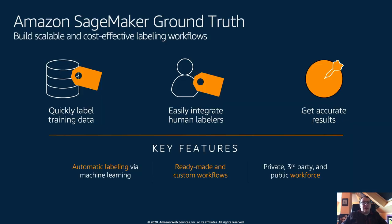To help customers with this, we launched SageMaker Ground Truth, which lets you annotate datasets at scale quickly and efficiently. The first step is to upload your dataset to S3, then create a workforce. That could be a private workforce from your own company, a third-party vendor workforce, or if you need to scale massively, you can use Amazon Mechanical Turk and scale to tens of thousands or hundreds of thousands of human labelers.